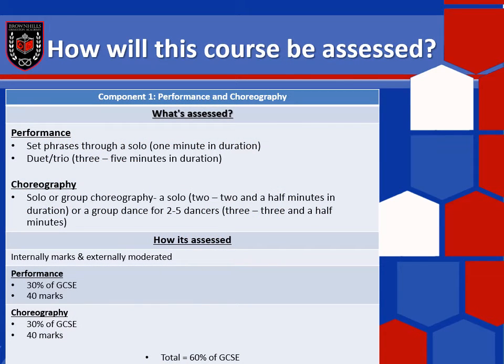The course is assessed in two parts, split between component one and component two. Component one covers your performance and your choreography. For performance, you are assessed through set phrases which you will learn — you will learn four different ones and we will select the best two to perform, each one minute in duration. The second part of your performance is a duet or trio using the other two set pieces, lasting between three to five minutes.